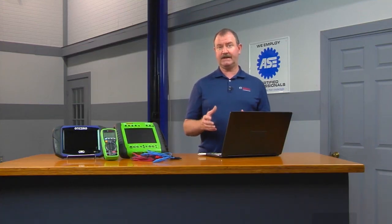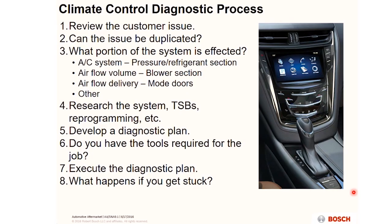The next step is: what portion of the system is affected? In the case of climate control, we really have several different sections. We have the AC system — the pressure and refrigerant section. We've got the airflow or the volume — what is the blower motor capable of doing? Then we have the mode doors, which take care of the directional side, and then other auxiliary components. Does it have an auxiliary air conditioning system? Does it have a factory air conditioning and heating/cooling system in the front, but in the back of the vehicle, a hang-on air conditioning system for rear air? You need to break it into sections so you know which direction you want to go.